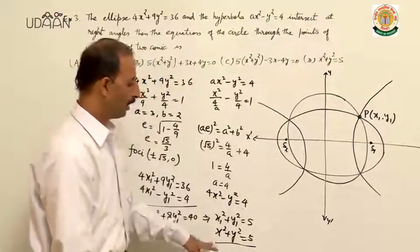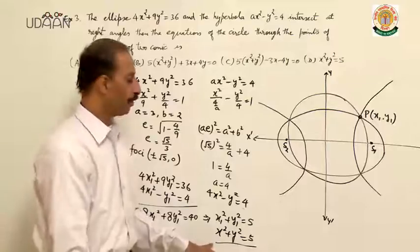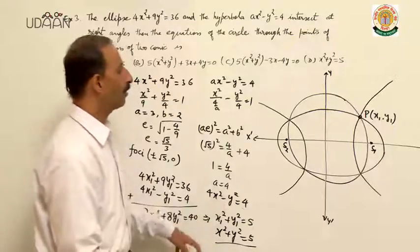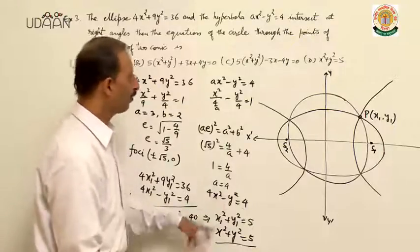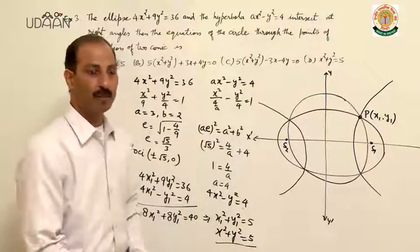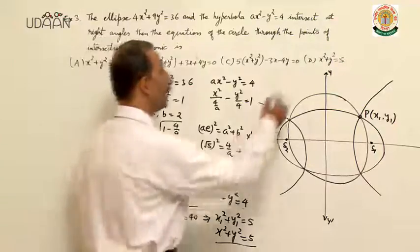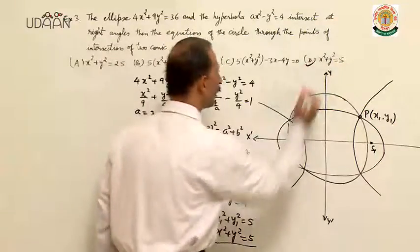That is the equation of the circle passing through the intersection point of ellipse and hyperbola. Option D is the correct option.